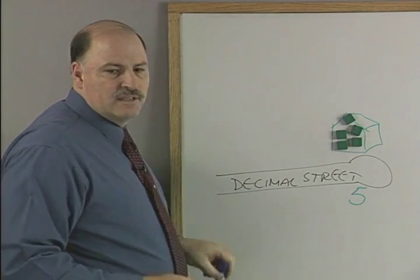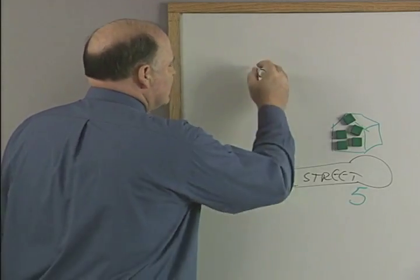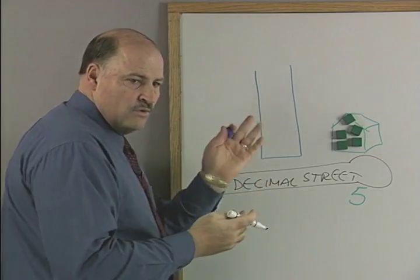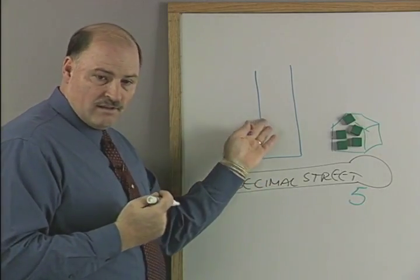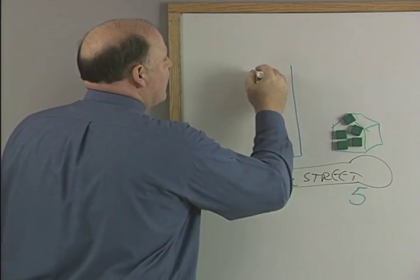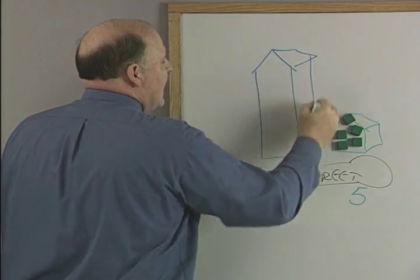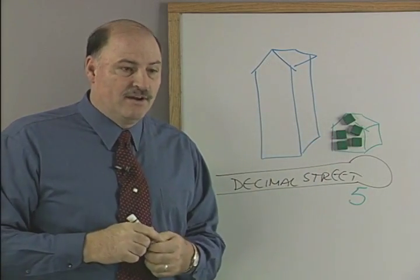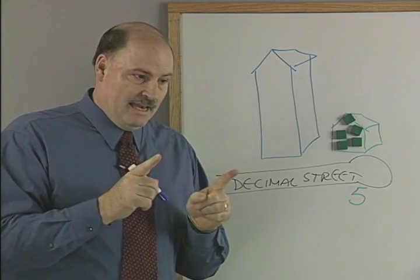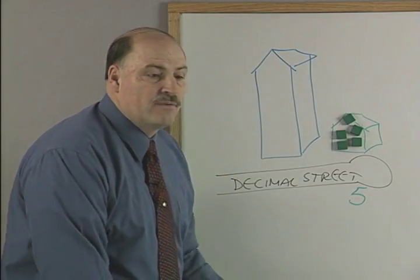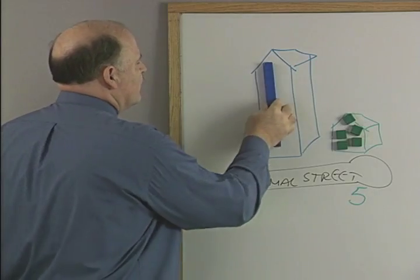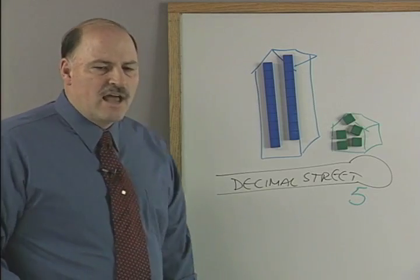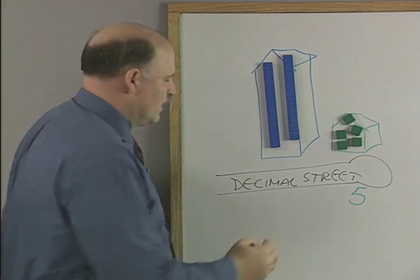Now who lives next door to the units? The tens. This is the blue, tall house. How many friends can I have living here? Nine. That's it — because that's why we count from zero to nine and we start over. So let's put two in there today. How many tens are home? Two.